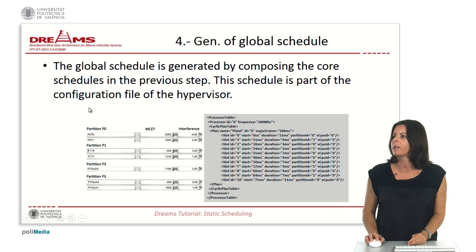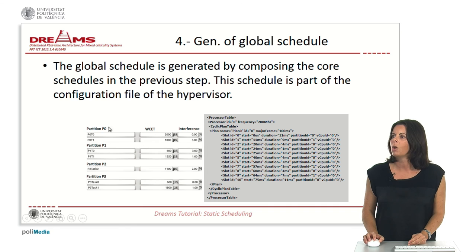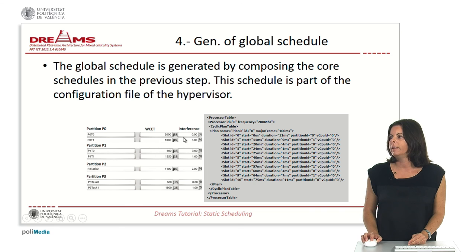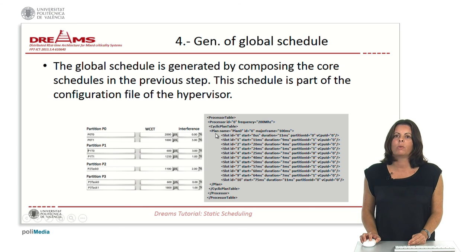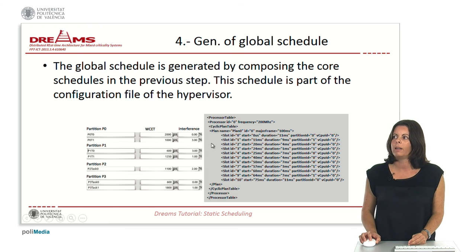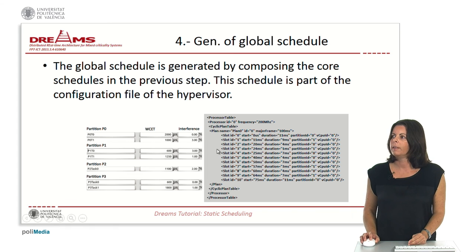Here is a simple example with the parameters of the partitions, their tasks, worst-case execution time, and interference. This is an example of how the scheduling table will appear in the configuration file. In this case we only have one processor; if we have more than one processor, the tables will be placed one following another.